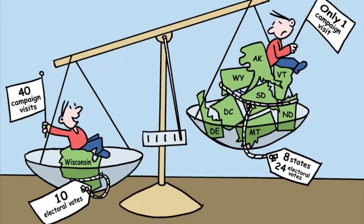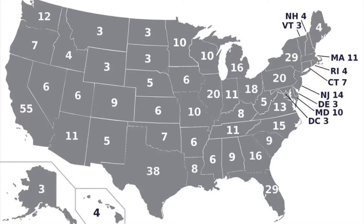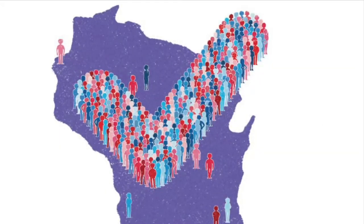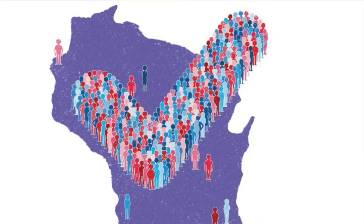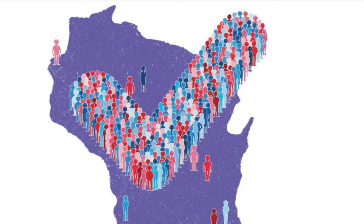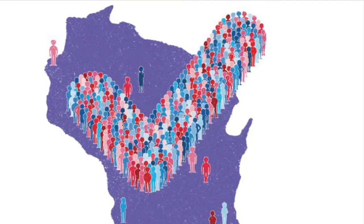Supporters of the Electoral College say that its main goals are to provide a clear winner and to provide power to smaller states that would otherwise be overlooked throughout the election season. Without the Electoral College, small population states like Vermont, Montana, and Wyoming would be left unnoticed by candidates, while all their attention would be towards large population states like California and Texas. According to Professor Judith Best, what the Electoral College does is structure the election and force candidates to form very broad coalitions.